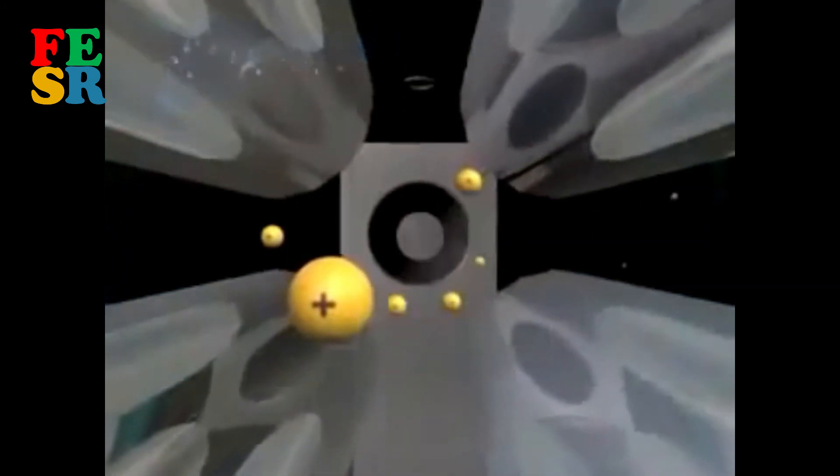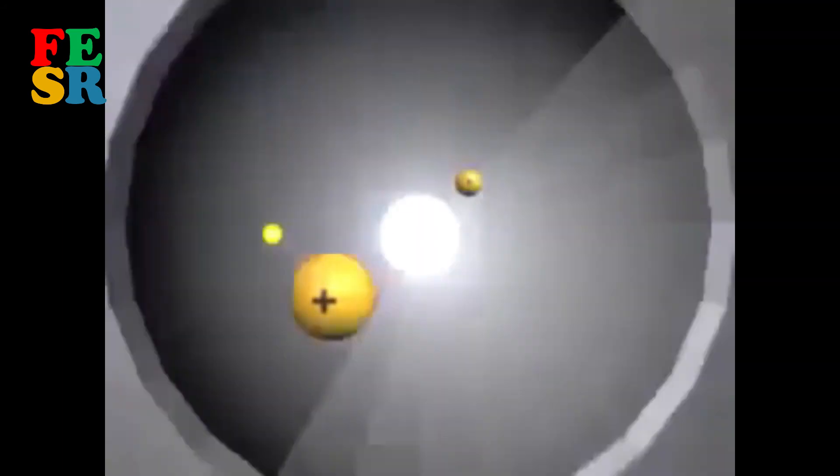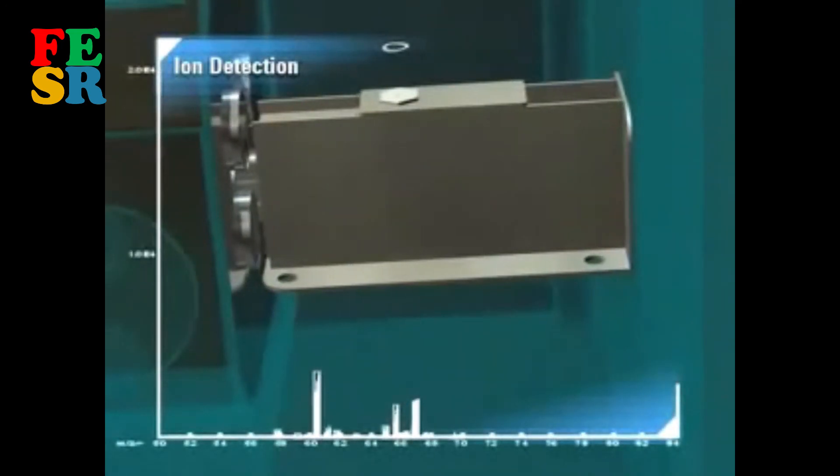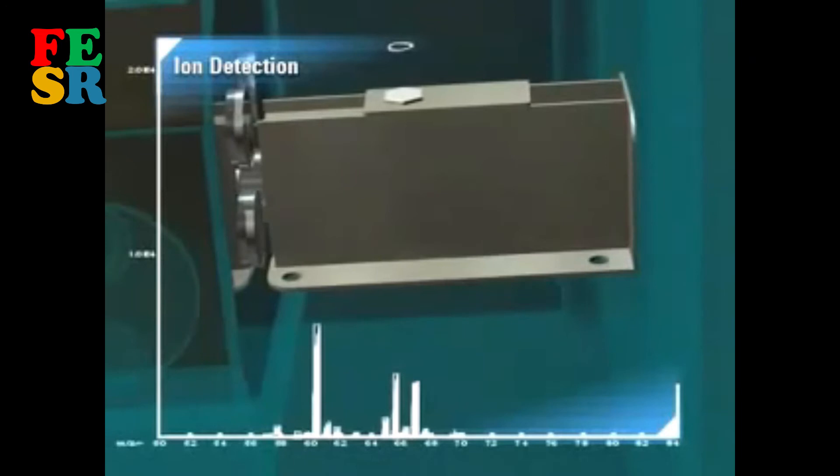Ions strike the detector and the resulting electronic signals are processed by the detector electronics and stored in a multi-channel scaler, creating a mass spectrum where intensity at a given mass is proportional to concentration of the isotope at that mass.